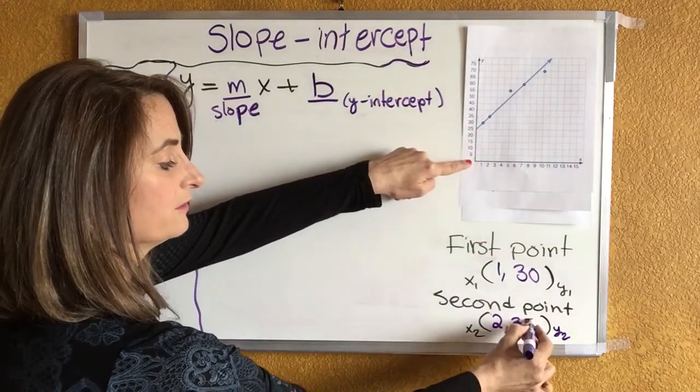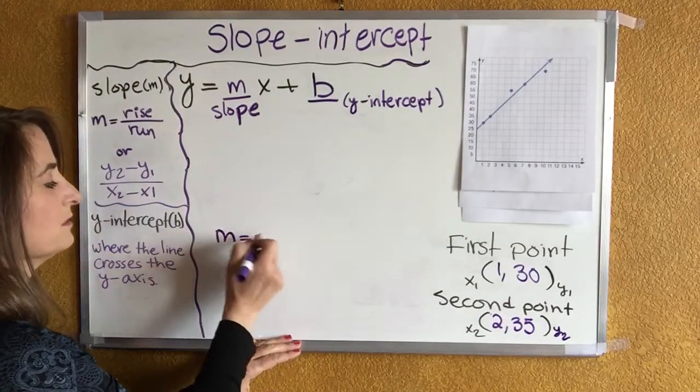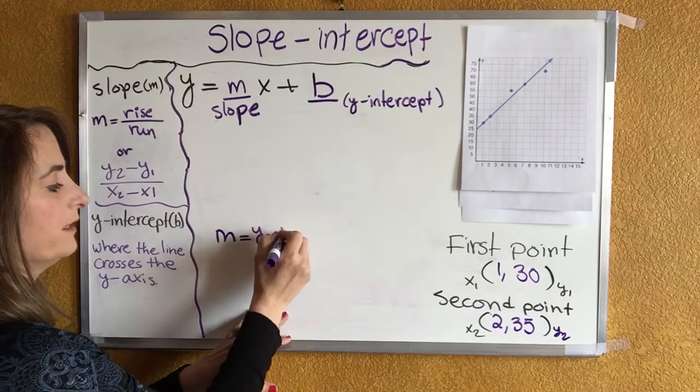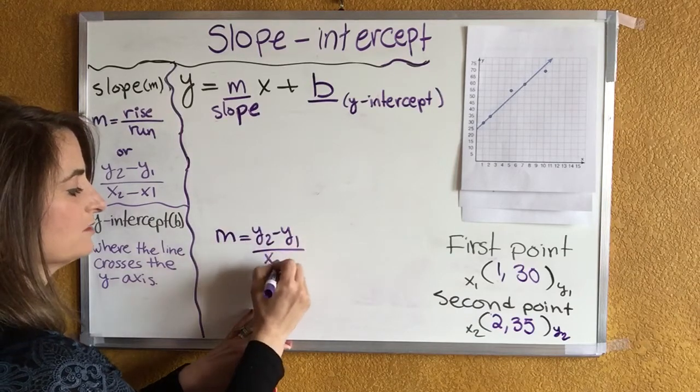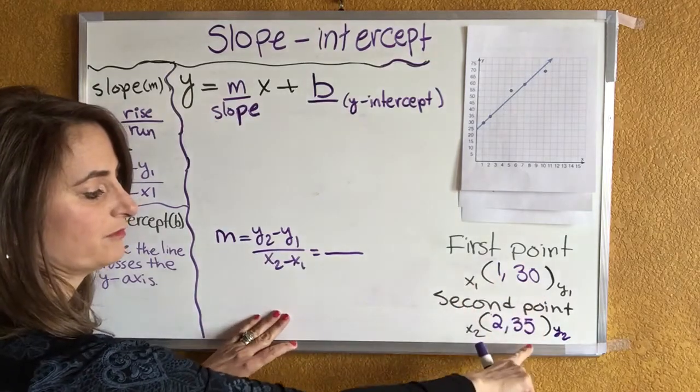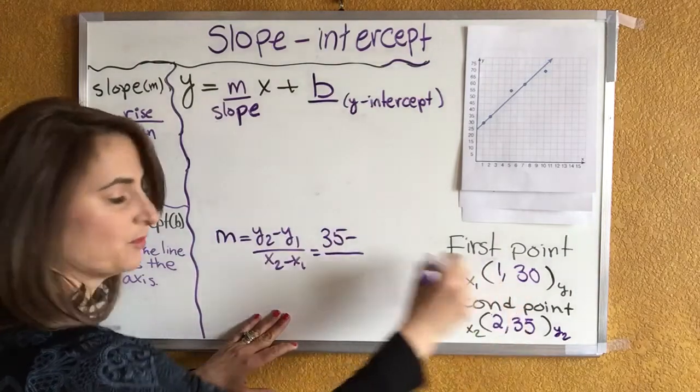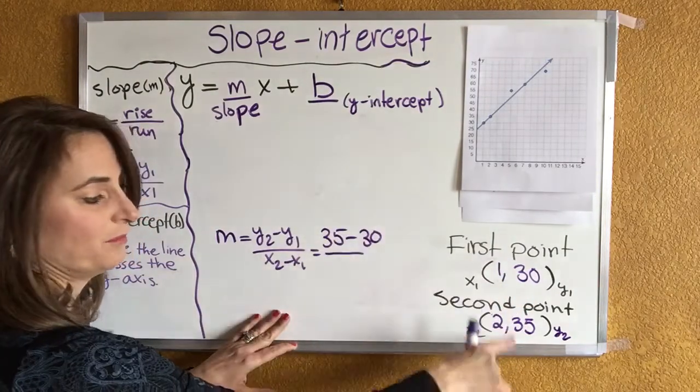Now write the equation for the slope: m equals y2 minus y1 over x2 minus x1. Take the information from the dots. The second point, the y is 35 minus the first point which is 30, divided by the x's, 2 minus 1.